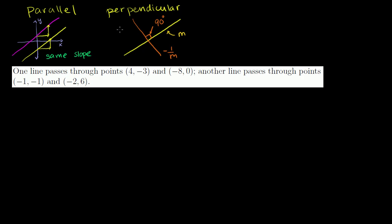Given this information, let's look at a bunch of lines and figure out if they're parallel, perpendicular, or neither. To do that, we just have to keep looking at the slopes. One line passes through the points (4, -3) and (-8, 0). Another line passes through the points (-1, -1) and (-2, 6). So let's figure out the slopes of each of these lines.